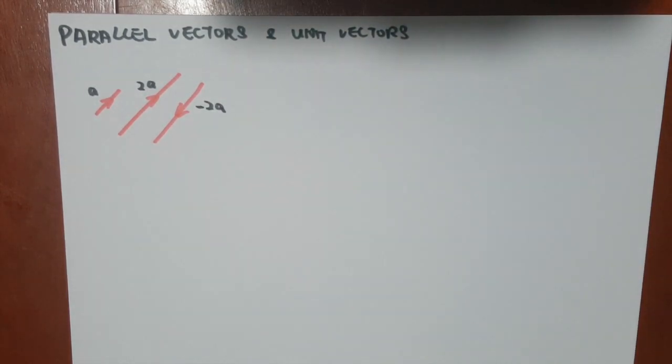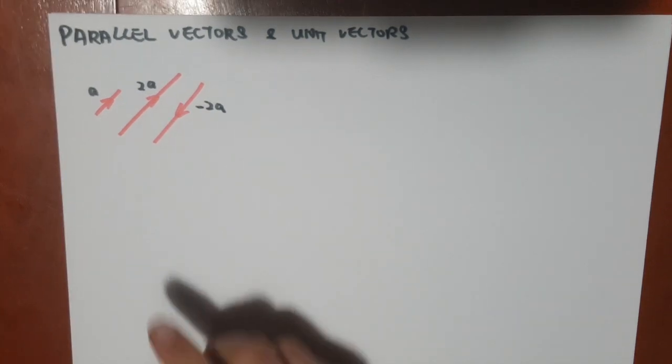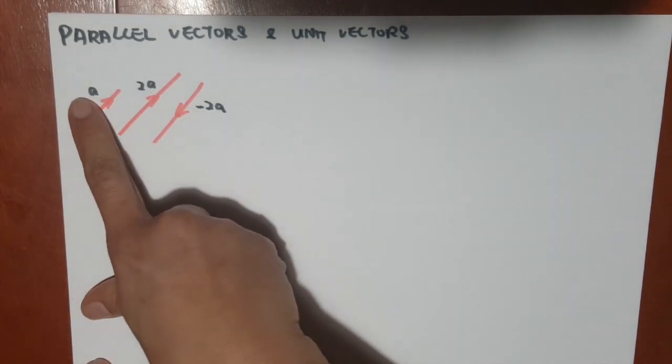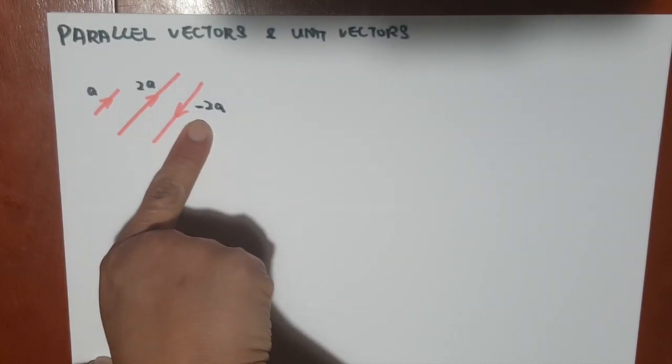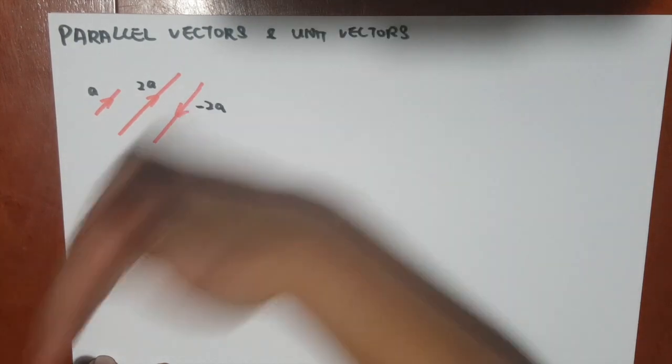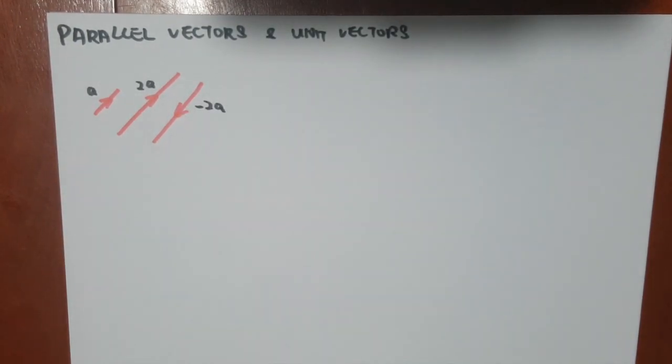So these are all considered as parallel vectors. And you can see that although the numbers are different, like this is just a and that's 2a and that's negative 2a, they are all heading the same direction or in exactly the opposite. That's called parallel.